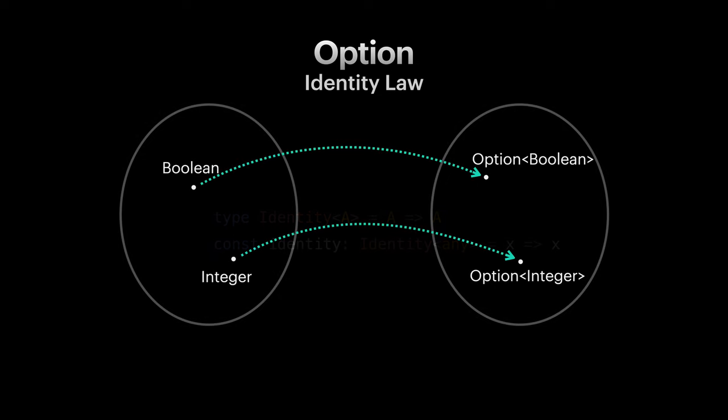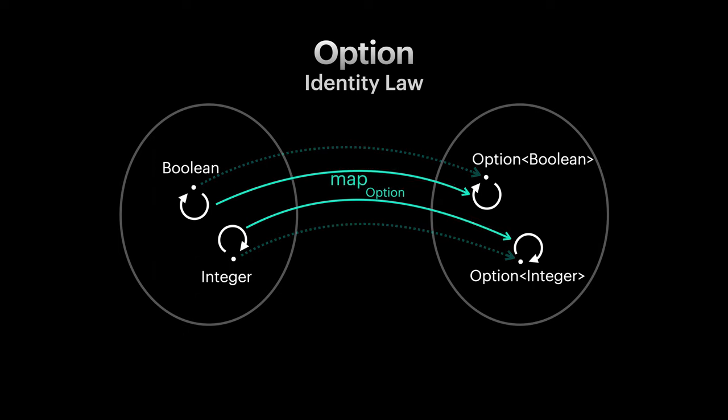For the identity law, things are much simpler. The identity function for all types is a unary function that returns its input as is. So when we map an identity function, we are actually pointing to the same identity function of the lifted type.